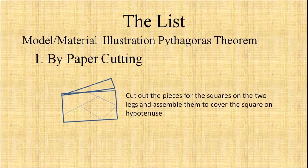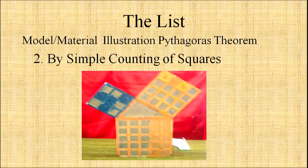From that we get that hypotenuse² = base² + altitude². We can also prove the Pythagorean theorem by counting simple squares with models.